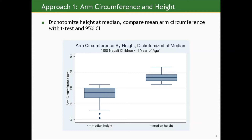How could we analyze the relationship between arm circumference and height, relating mean arm circumference to differences in height, given what we know? Well, flashing back to comparing means: since height is a continuous predictor, we could dichotomize it at the median and compare the mean arm circumference between the two height groups — above and below median — using a t-test with a 95% confidence interval. From the box plot, we can see what most would expect: children in the above-median height group tend to have greater arm circumferences, showing a positive association.